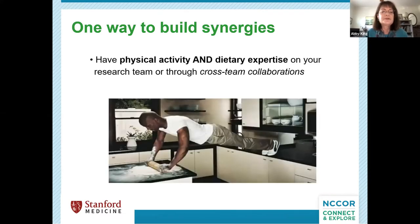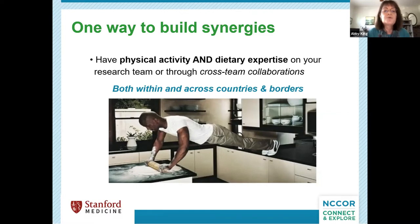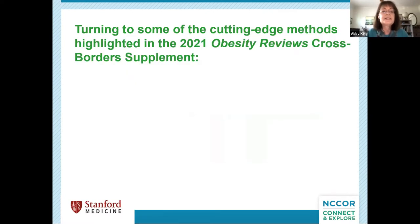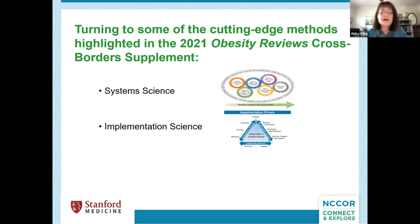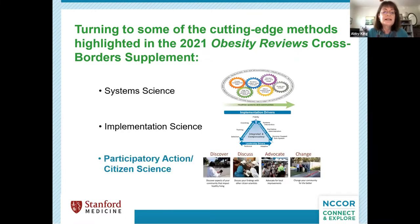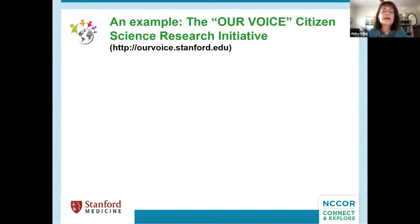One way to build synergies is to have physical activity and dietary expertise on your research team or through cross-team collaborations, both within and across countries and borders. Turning to cutting-edge methods highlighted in the supplement: there is a great review on system science, excellent information on implementation science, and also information on participatory action or citizen science — which I'll be focusing on now with an example called Our Voice.